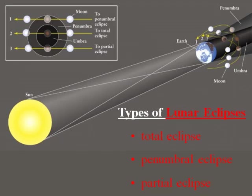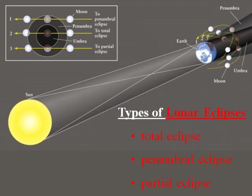The top diagram shows the moon only going through the penumbra. The penumbra is not very dark, and a penumbral eclipse is really not very noticeable. Most of us cannot see any difference in the darkness of the moon — not very spectacular.